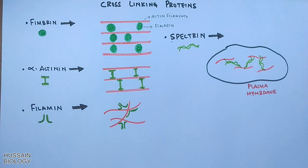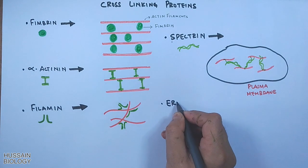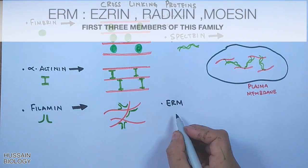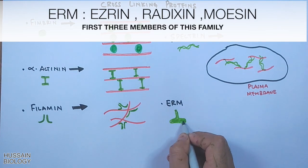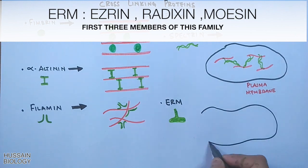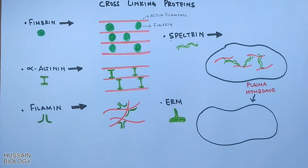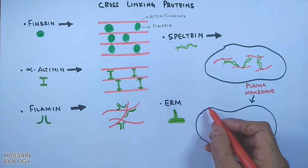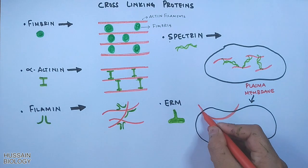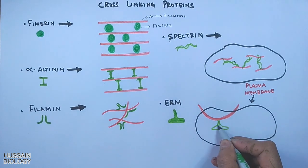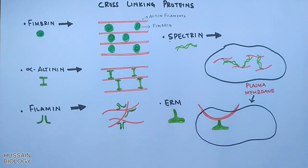The next membrane binding protein is ERM — named after the first three members of the family: ezrin, radixin, and moesin. The ERM proteins bind actin filaments to the transmembrane glycoproteins of the cell membrane, thus aiding in signaling and in endocytosis and exocytosis.